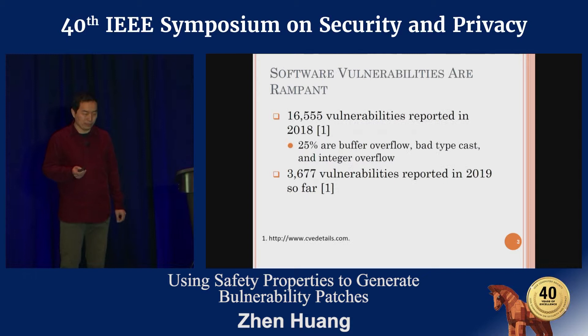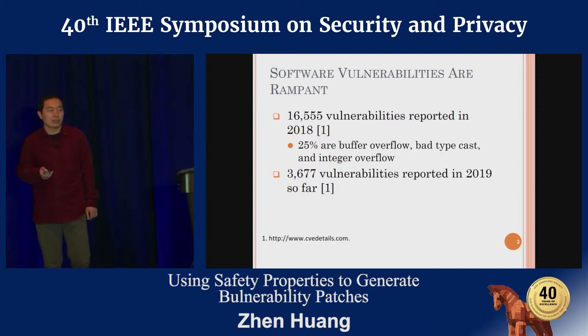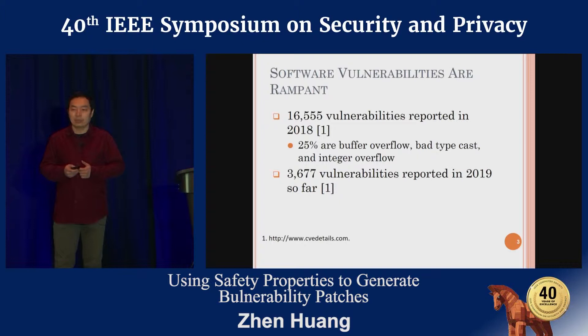Software vulnerabilities continue to be a rampant problem. Last year, over 16,000 vulnerabilities were reported. Among them, 25% are well-known vulnerabilities, including buffer overflows, bad type casts, and integer overflows. So far this year, 3,000 vulnerabilities have already been reported.